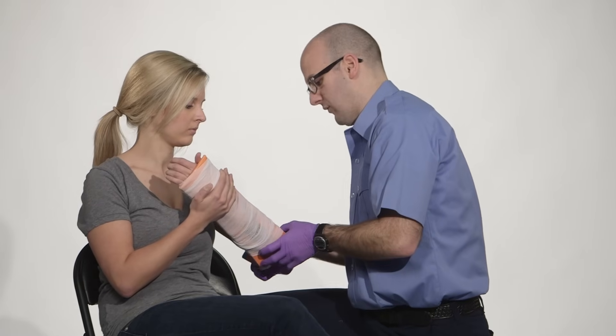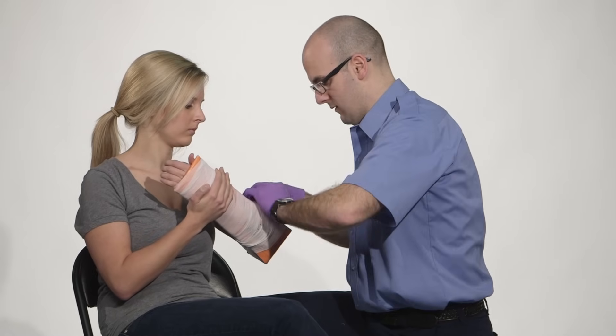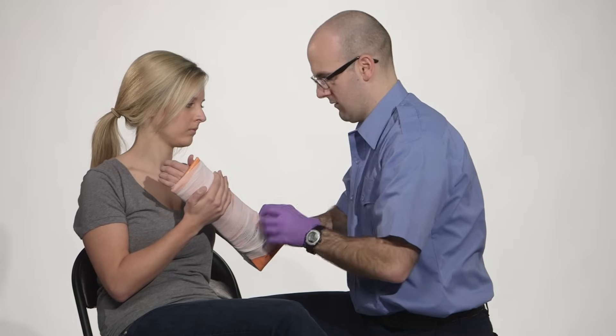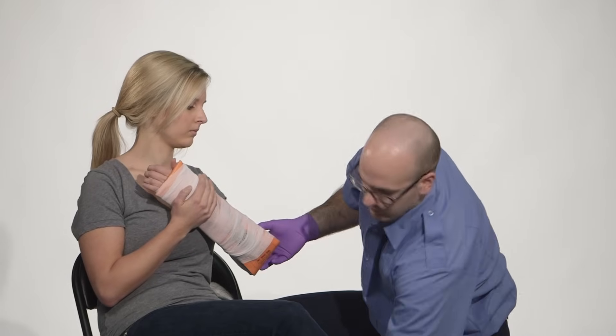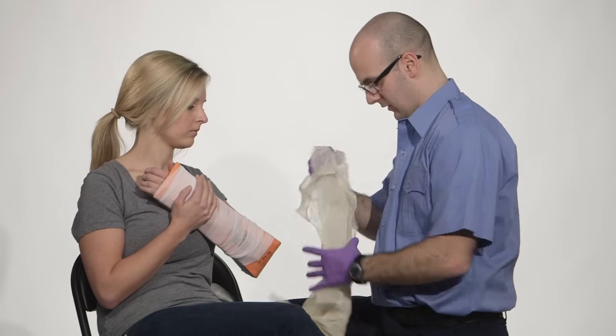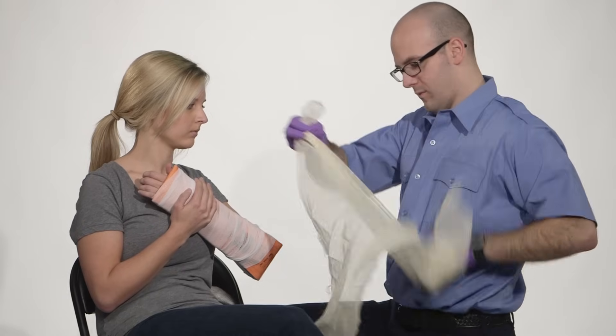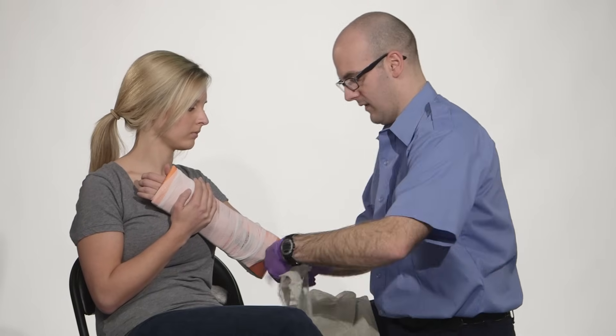Alright, so now I have the splint secured. I'm going to immobilize using a sling, tying a knot in the end, placing the knot at the back of the elbow.